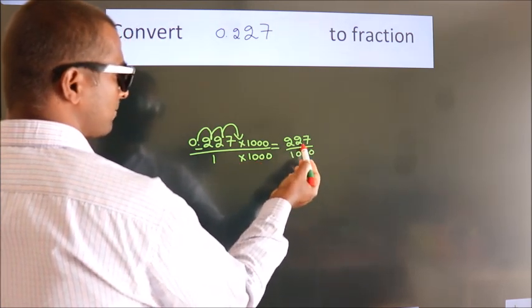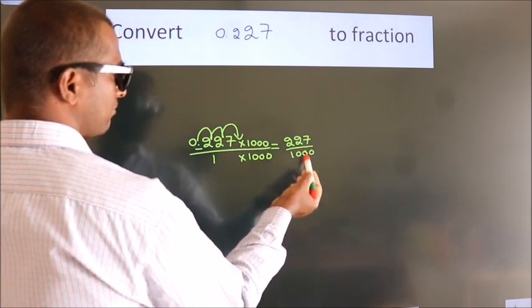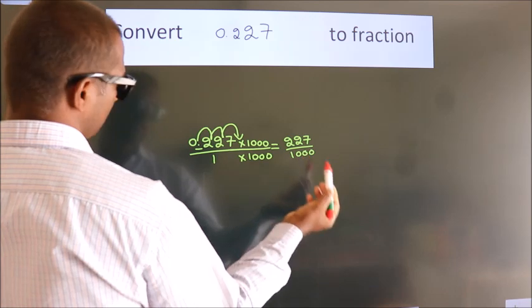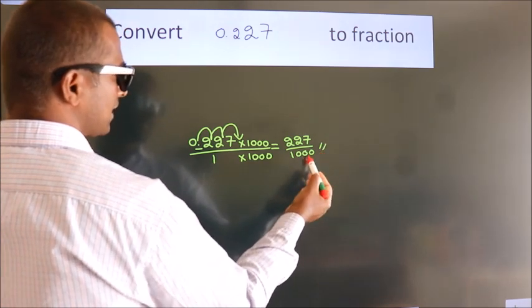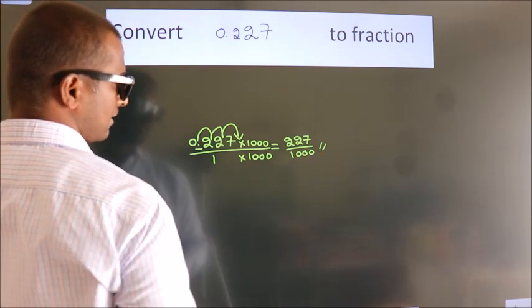This cannot be simplified any further. So this itself is our fraction: 227/1000.